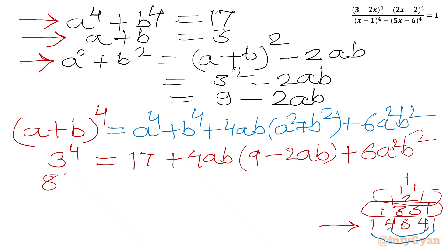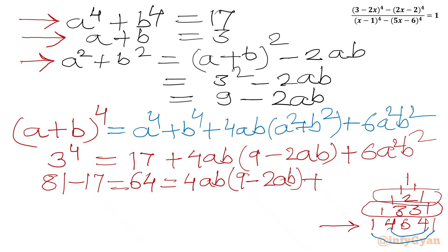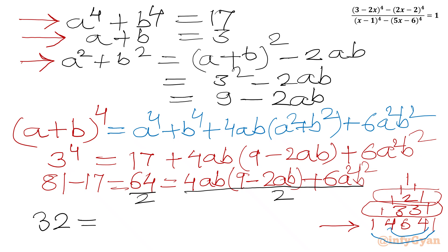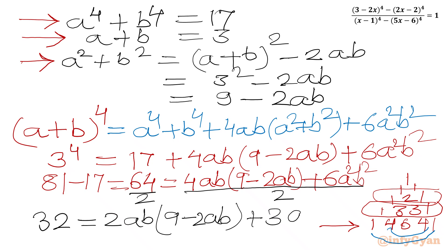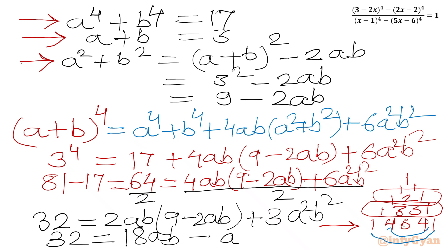So 81 minus 17 equals 64, giving 64 equal to 4ab times (9 minus 2ab) plus 6a^2b^2. Dividing both sides by 2: 32 equals 2ab times (9 minus 2ab) plus 3a^2b^2. Expanding: 32 equals 18ab minus 4a^2b^2 plus 3a^2b^2. Bringing all terms to the left-hand side gives the quadratic equation: a^2b^2 minus 18ab plus 32 equal to 0.